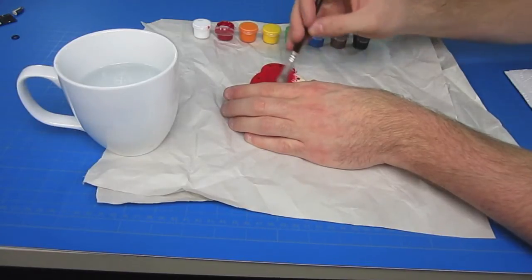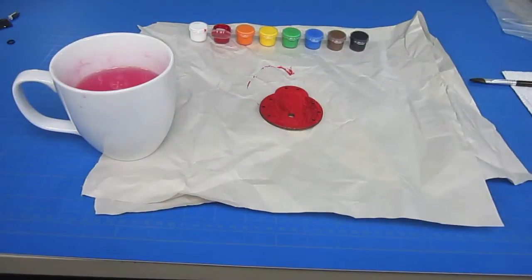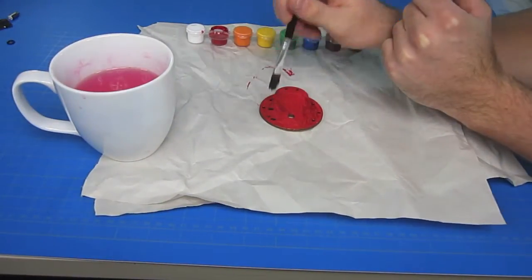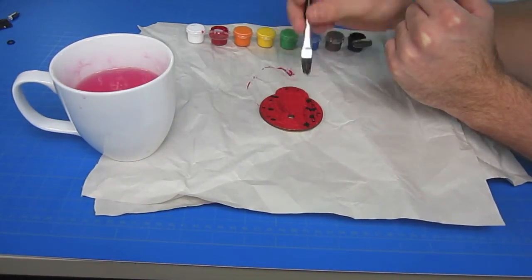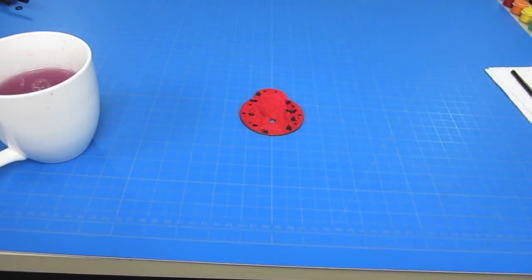Start by painting your bug body. We're just using some standard off-the-shelf craft paint. Decorate your bug to your own liking. Once finished, let dry completely before moving on.